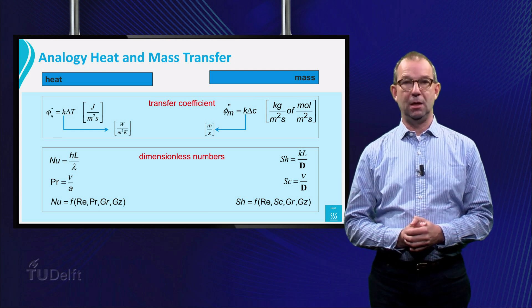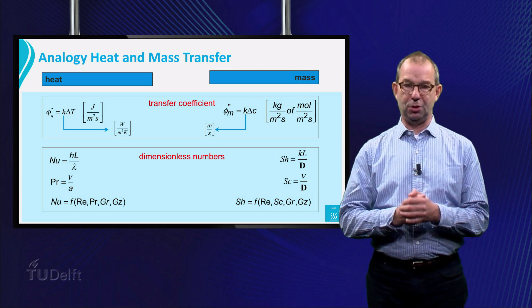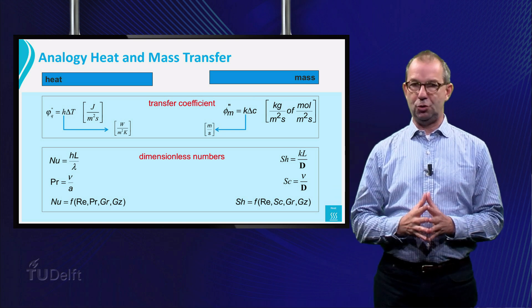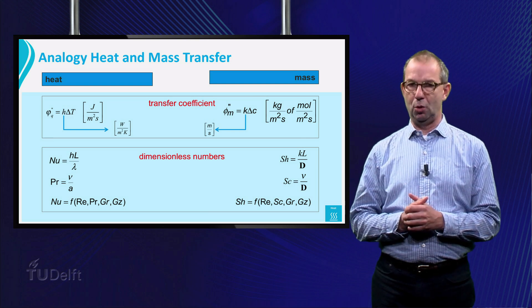In case of heat transfer, the difference in density is a consequence of the temperature difference in the system. For mass transfer, it is directly related to concentration differences of species. Finally, the Grads number plays a role. It is a kind of Fourier number, but with x over v instead of time.